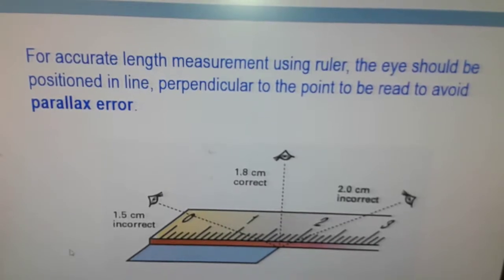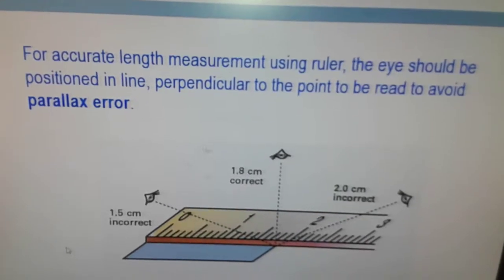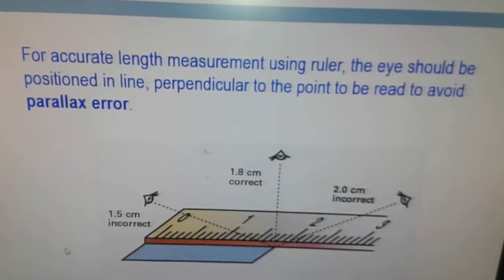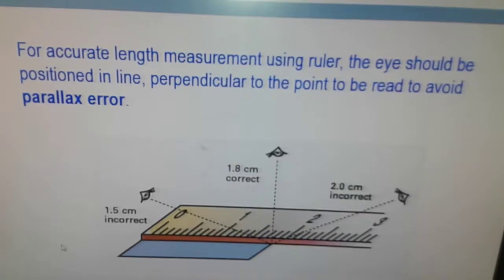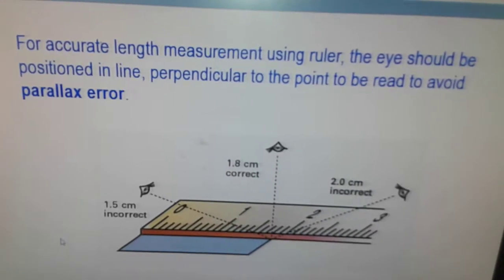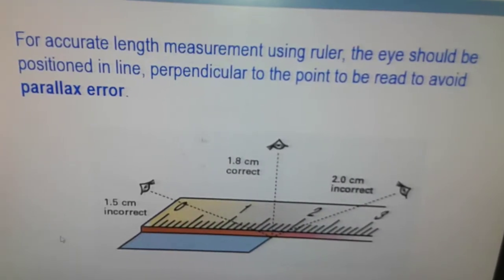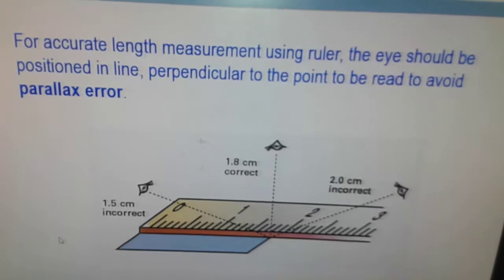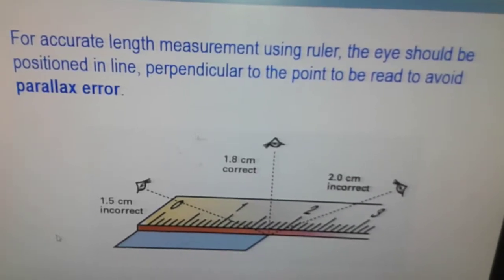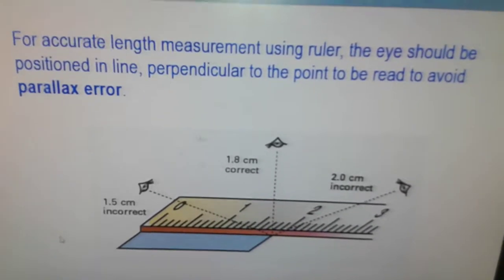The first position on the left-hand side is wrong. The middle one is the correct one — your eye should be directly above, perpendicular to the point where you are reading it.